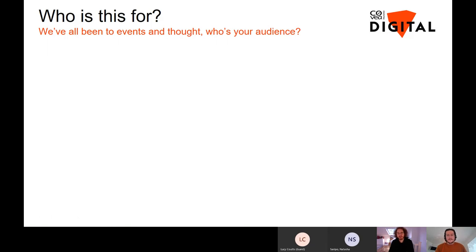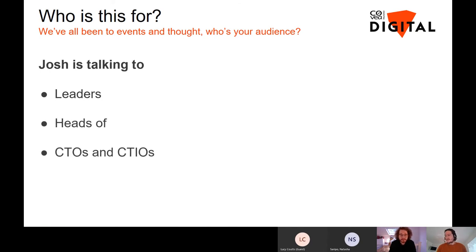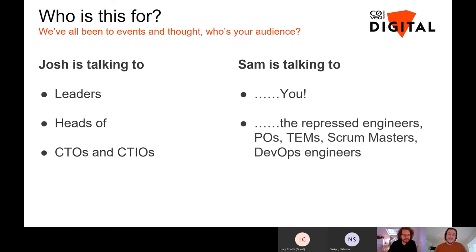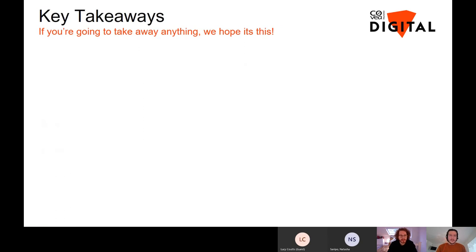So who is this talk for? We're talking to a few different demographics. Specifically we're talking to leaders — Heads of, CTOs, and CTIOs — and then everybody else that isn't in that leadership function: product owners, engineers, POs, Scrum Masters, DevOps engineers — the people that will get this work done. Me and Josh want to give two different, varied views to show how we've shaped and delivered this function from a practical level.